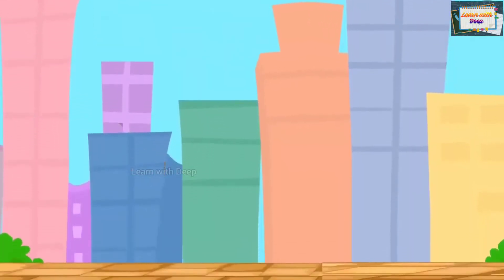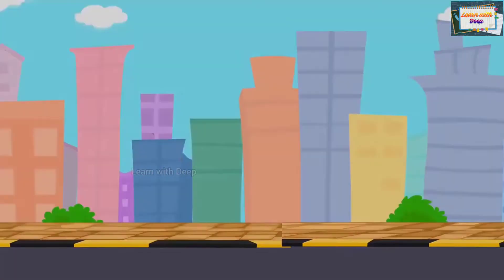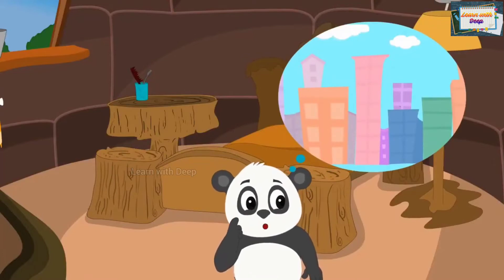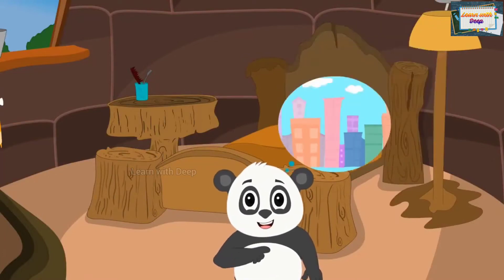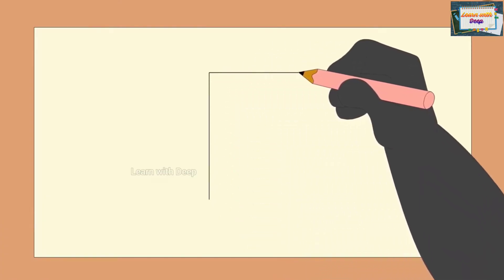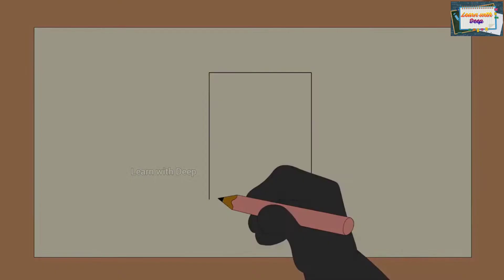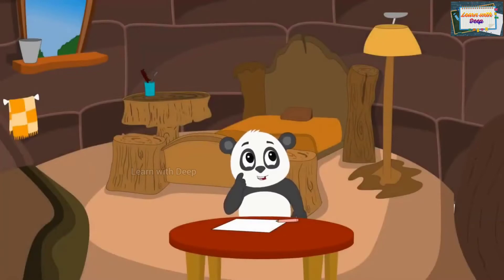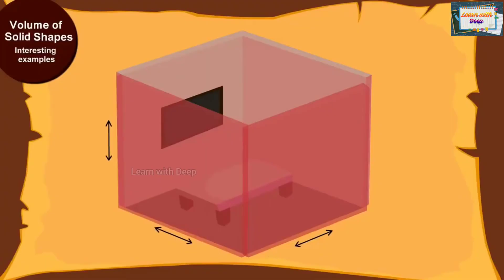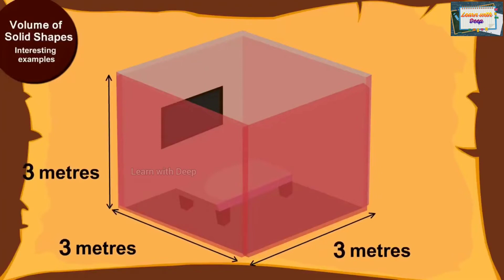Why don't I build such a tall building in Champapur? Golu thought about it and started designing the building. To make each house unique, I will make it cube-shaped. The sides of each house will be 3 meters long, he thought.